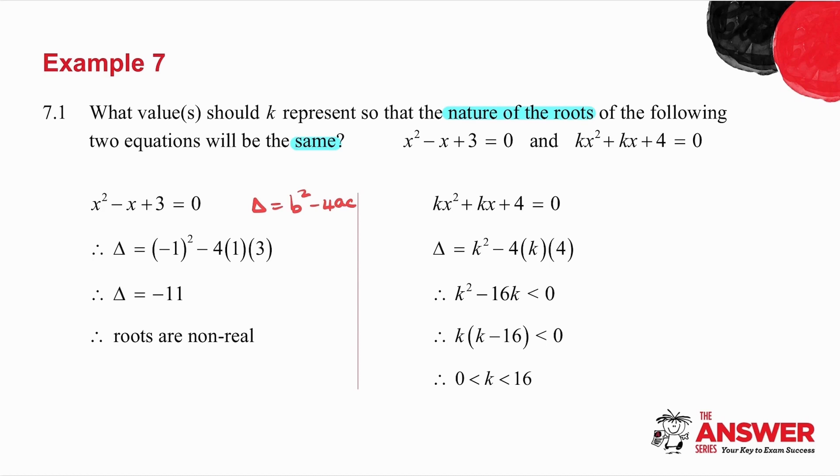If delta is negative, it means that the roots are non-real. Now the nature of the roots must be the same. So if the roots of this first equation are non-real, it means the roots of the second equation must also be non-real.